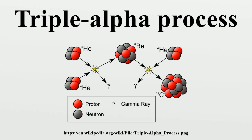Ordinarily, the probability of the triple alpha process is extremely small. However, the beryllium-8 ground state has almost exactly the energy of two alpha particles.